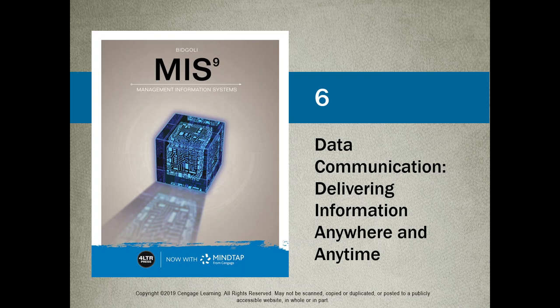Welcome back. This is CSIS 2200, Systems Analysis and Design. We're going to carry on with chapter number six, which is entitled Data Communications. This chapter is very important, like all the others, because it really instills the concepts behind how data is transferred from one location to another — which is what we do all the time when we're on the internet, when we use cell phones, when we use any managing information system.